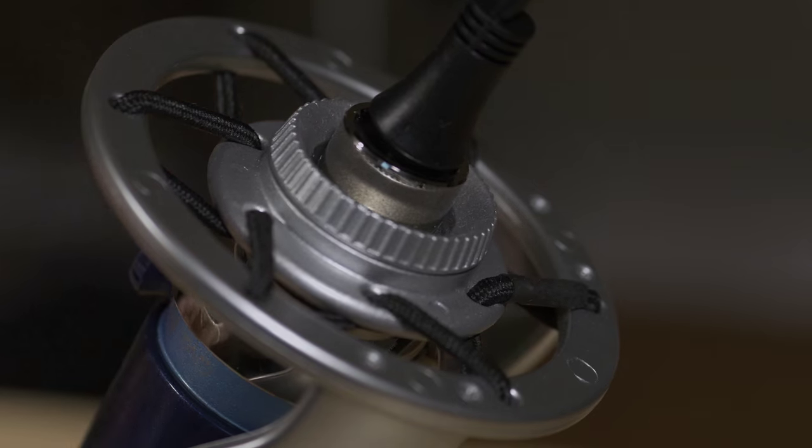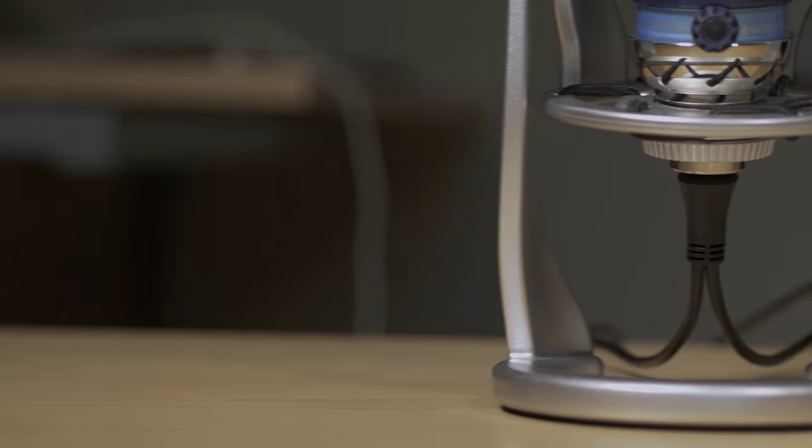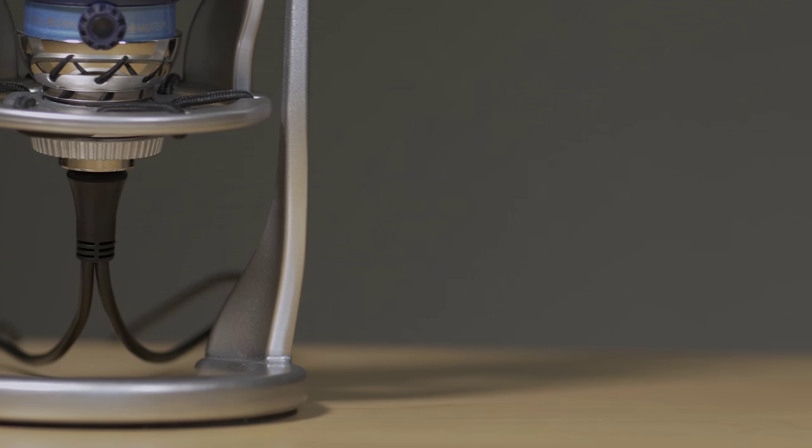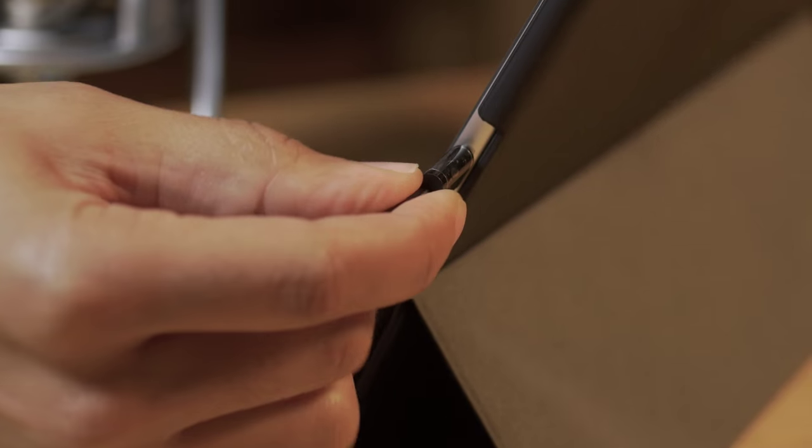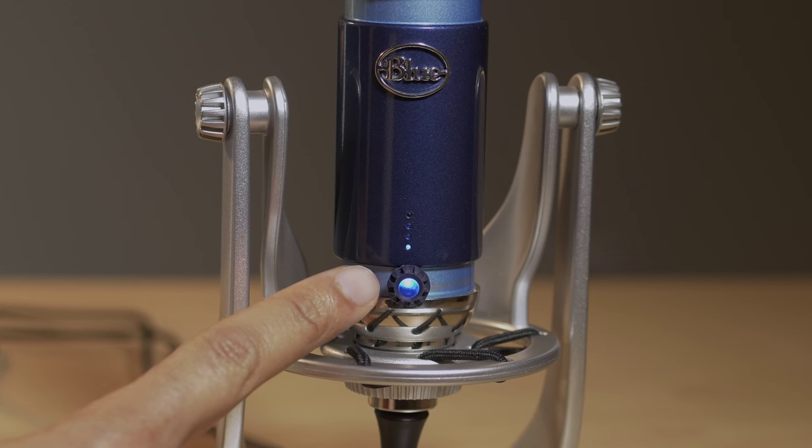On the opposite end, you'll see the 3.5 millimeter input and the lightning connection. Now it's just a matter of plugging the lightning cable into the iPad, and there we go. Once you plug it in, just launch an application and you'll see the light for the BlueSpark Digital come on.